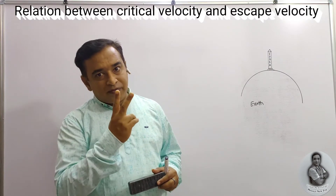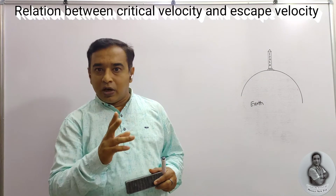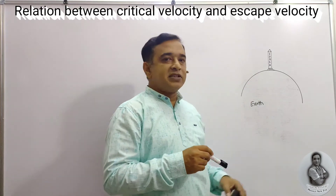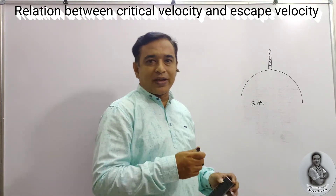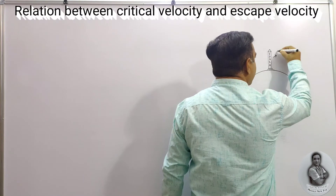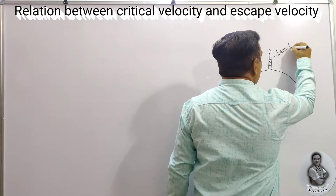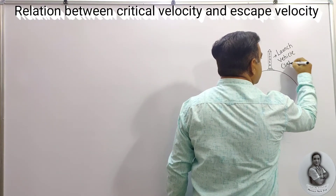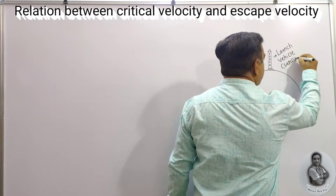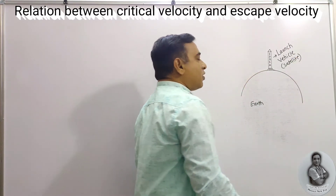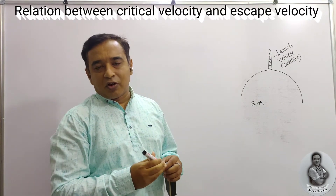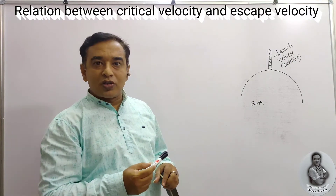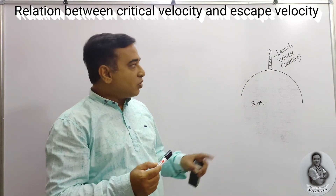So those are the two definitions regarding these two velocities. Now we need some factors — first let us see the diagram. Here the big object drawn is actually a launch vehicle. This launch vehicle contains the satellite, and our purpose is to launch this and get the relation between critical velocity and escape velocity.